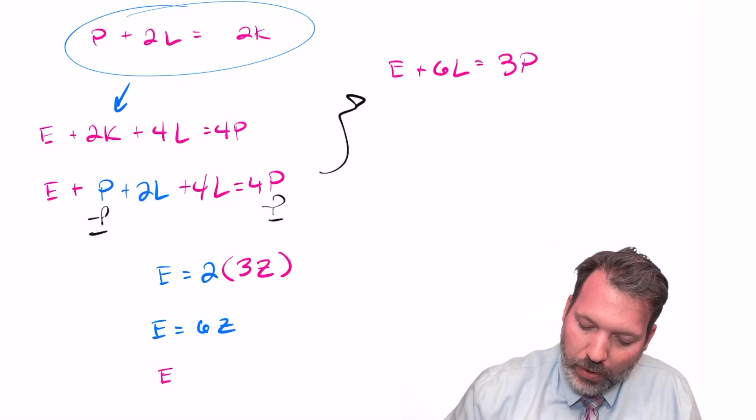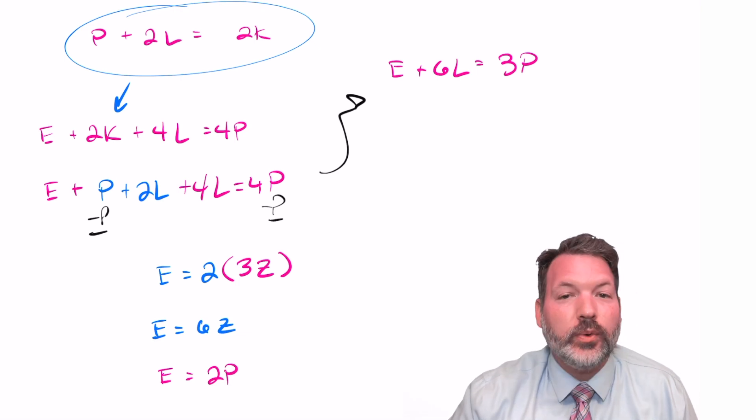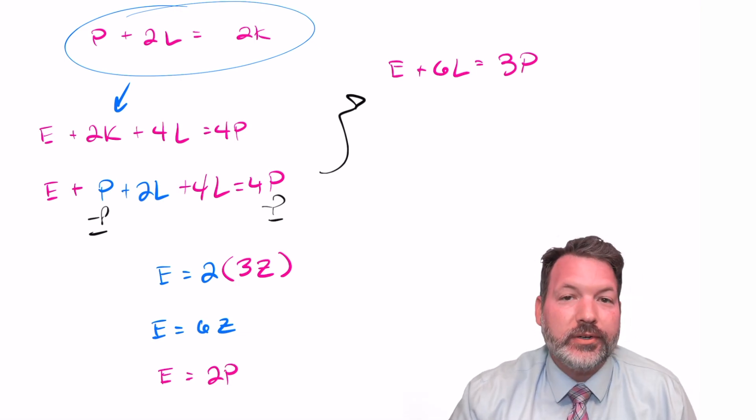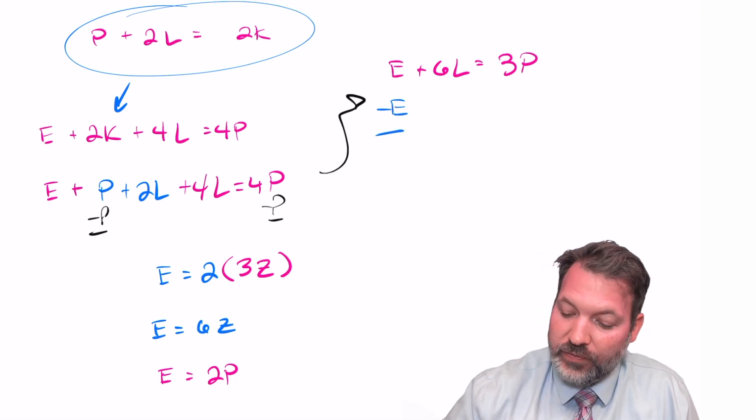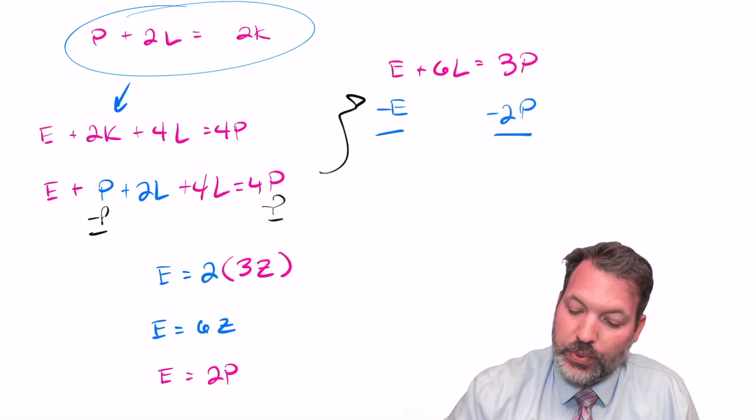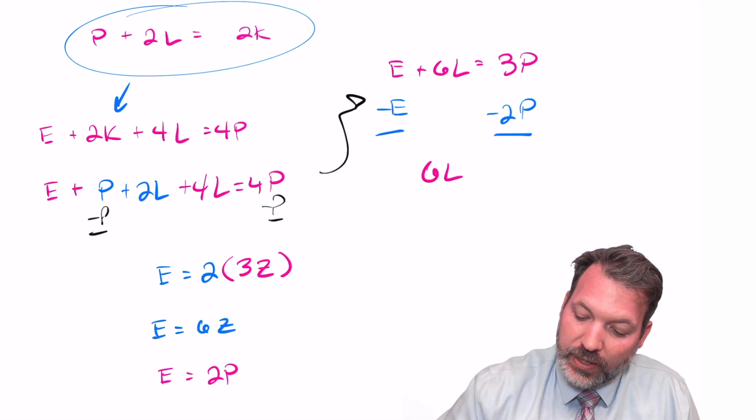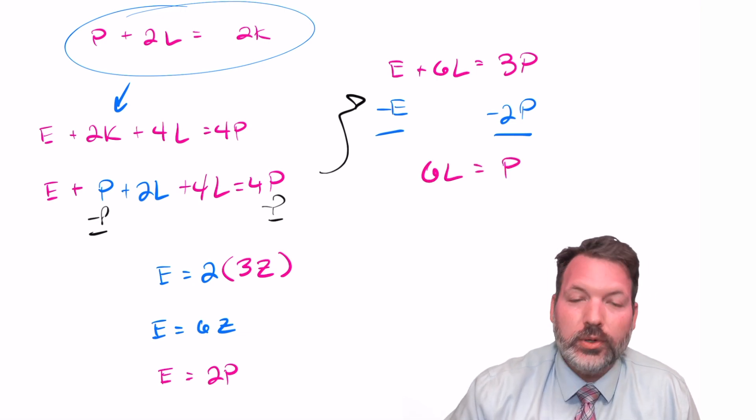And then we can come back to one of the equations we started with, E equals two P. And once again, use our subtraction property of equality, subtracting E on the left side of this equation, subtracting two P on the right side, and getting that six L is equal to one P.